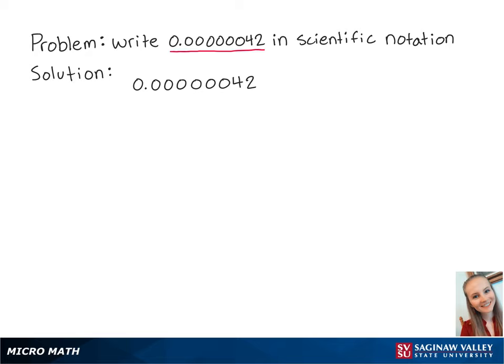For this problem, we're going to write this very small number in scientific notation. When we write in scientific notation, we want to move the decimal after the closest non-zero number, which is 4.